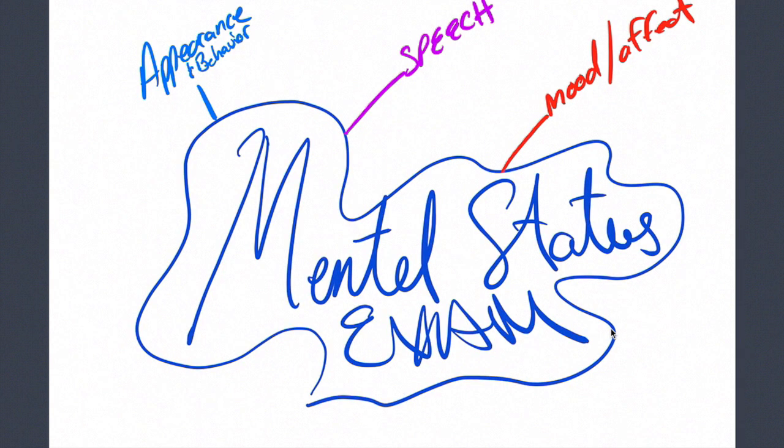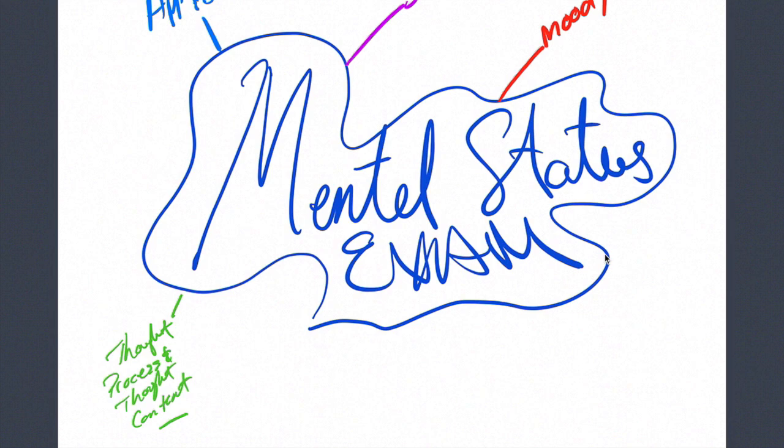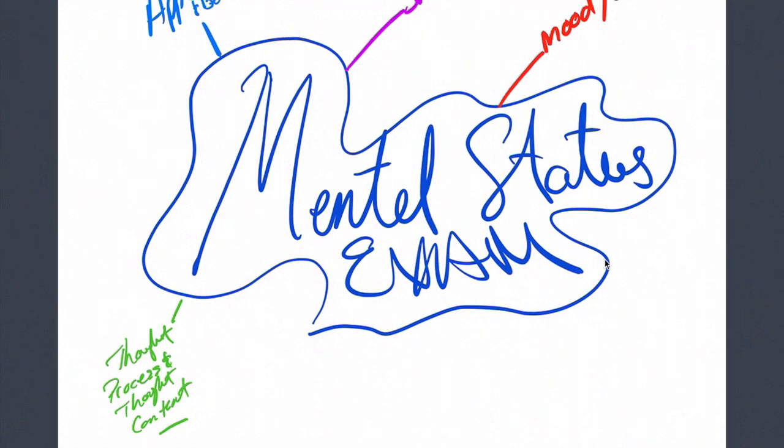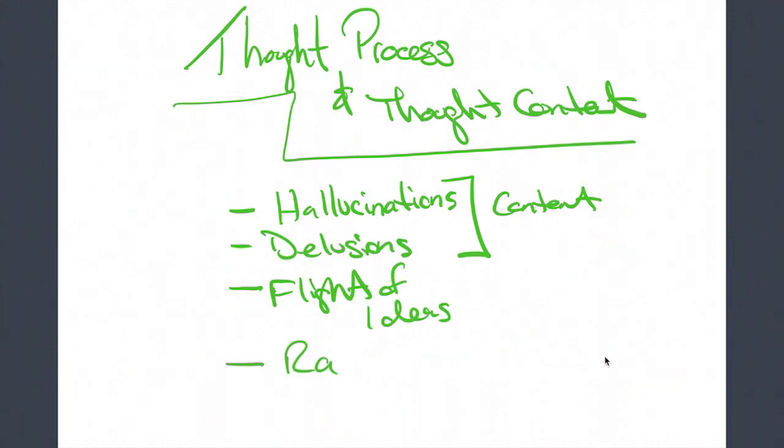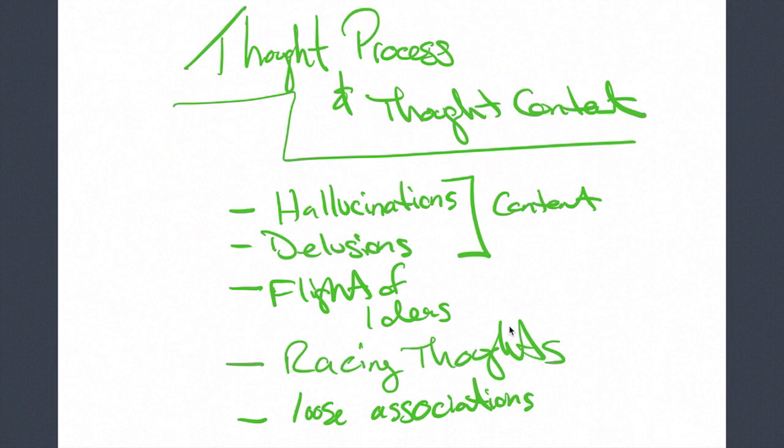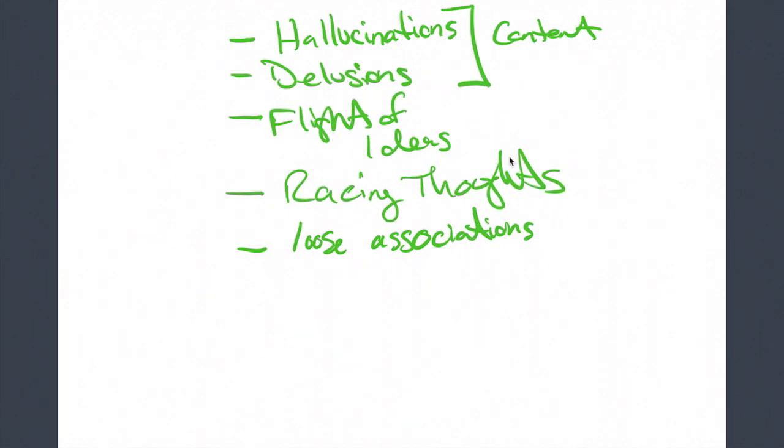Next we have thought process and thought content. This is basically what is the patient thinking, and what is the association, or what is their train of thought? What is their thought process? Things to look for or to ask in the patient would be something like hallucinations, delusions. These are examples of content. Flight of ideas, racing thoughts. Do they have loose associations? Someone could be thinking really quickly, has a lot of different ideas that's popping into their head, a lot of different thoughts that they're trying to communicate. They'd be having a flight of ideas, they'd be having racing thoughts. This category can also include other things like anything that stands out, for example, phobias, obsessions. So that's a general overview of thought process and thought content.